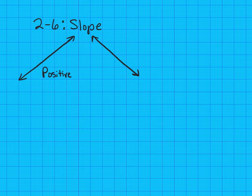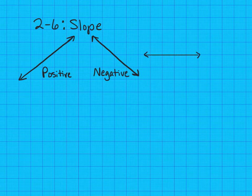A line that is going down to the right is a negative slope. A line that is horizontal has zero slope.